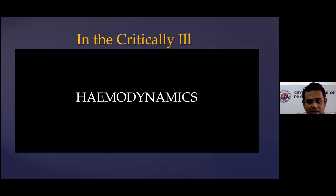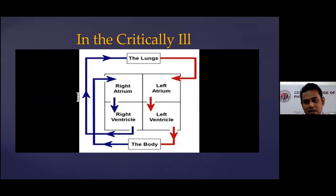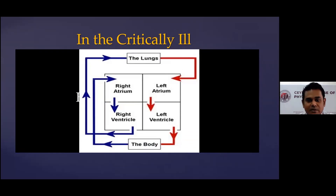In a critically ill patient, we are mainly worried about hemodynamics — basically how the blood flows. The lungs carry oxygenated blood into the left side of the heart and from there to the entire body, then it circulates back to the right side of the heart, which pumps through the pulmonary artery to the lungs for oxygenation. If there's any problem within this circulatory system, you may have hemodynamic problems. My colleague discussed the left side — mean arterial pressure — and I will talk about the right side, which is the central venous pressure.